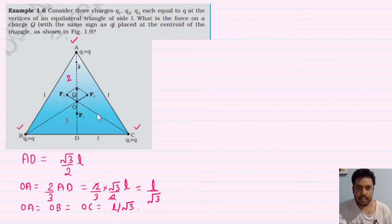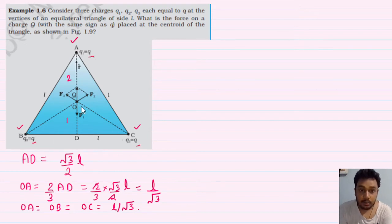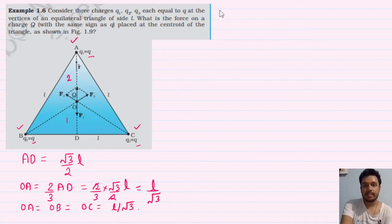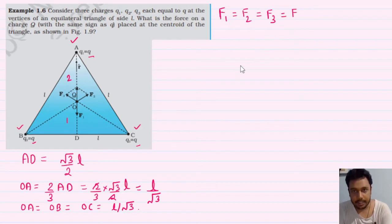अब आगे ध्यान दो। अगर मैं इस charge Q पर force निकालूँ, तो यह charge Q है, यह भी charge Q है, यह भी charge Q है। तीनों का distance इस capital Q से बराबर है, तो तीनों के force का magnitude भी सेम आएगा। तो F1 = F2 = F3 = F.